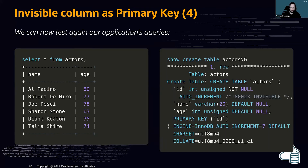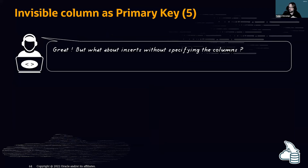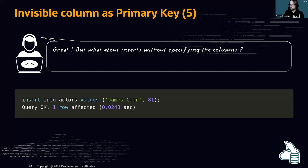We can verify the table definition now shows an invisible primary key. For inserts, you can still do INSERT INTO actors VALUES(...) without specifying the column — your legacy application can keep working exactly as before. The data was added without any problem.